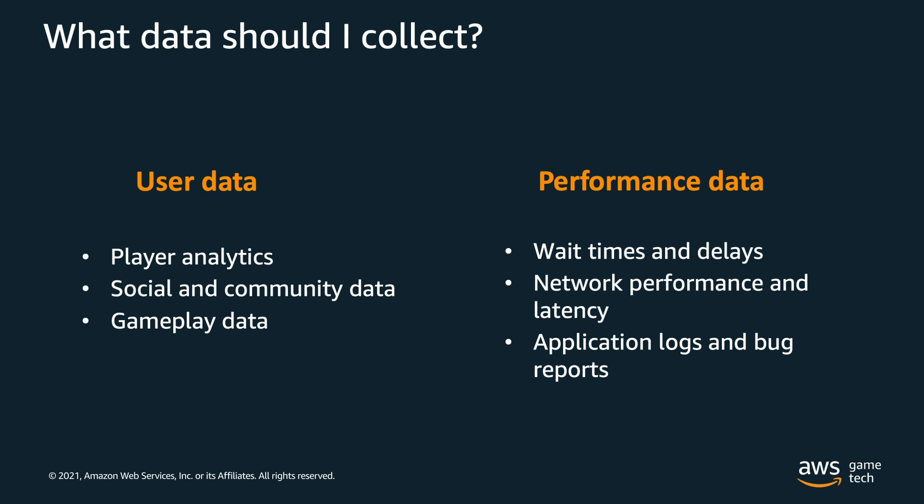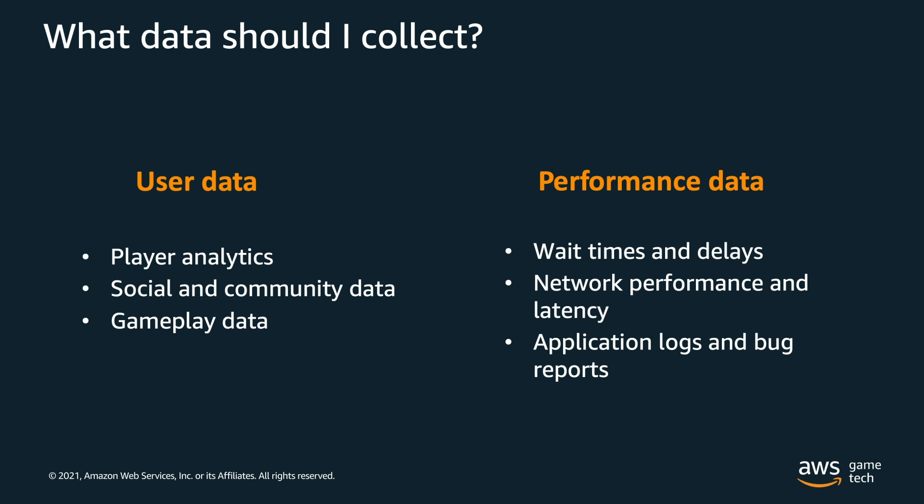Ideally you want to collect all of this data and more, so understanding what data to collect and how to collect it is the first challenge. The second challenge is understanding that the data you collect has a shelf life — the older data becomes, the less useful it is in helping you with timely reactions. You really need to consider the questions you have and the type of answers you're looking to get to understand when is the best time to look at your data. To address this, there are typically two different types of analytics pipelines: batch analytics pipelines and real-time pipelines, which allow you to get insights at different speeds.